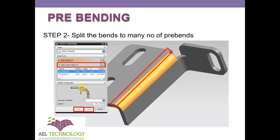It is asking from where to start the prebends. I select this bend and for the start edge I select this edge and give 45 degrees. So from this edge, it will make a 45-degree bend and split this bend into two.